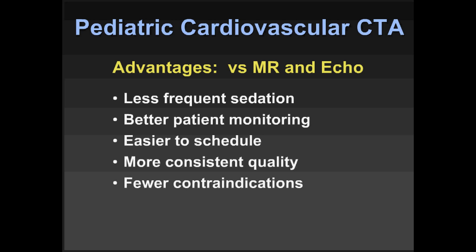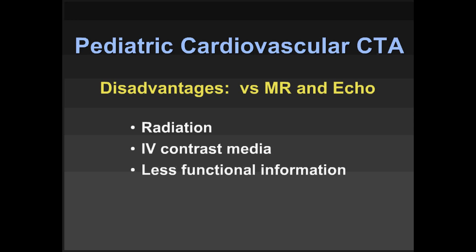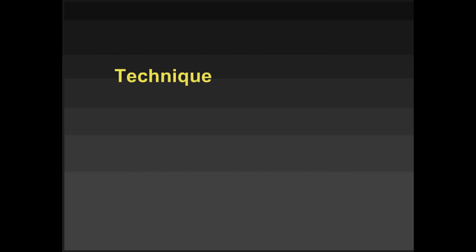There are also fewer contraindications with CT versus MR, and finally we have better global assessment. A lot of what we do is look at associated airway abnormalities and other congenital abnormalities, and CT really gives a better assessment for these than echo and often MR. The disadvantages include radiation and IV contrast media, although the problem of contrast reaction or nephrotoxicity in kids is vanishingly small. While we're getting more functional information, echo and MR give us better functional assessment, particularly in small children.